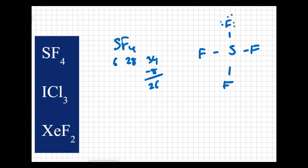I can put six electrons on each of the four fluorines — that's 24 electrons — leaving two electrons remaining. I can't put them on the fluorines because they're filled and can't expand their octet. The only place I can put them is on the sulfur. So sulfur here has an expanded octet, but that's okay — sulfur can expand its octet.